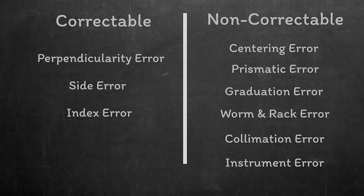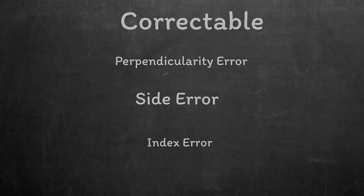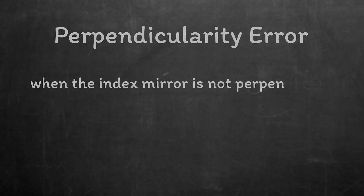Now we can move on to the correctable errors. For the correctable errors you need to correct them in the right order. First you've got the error of perpendicularity. This describes the error caused when the index mirror is not perpendicular to the plane of the instrument.